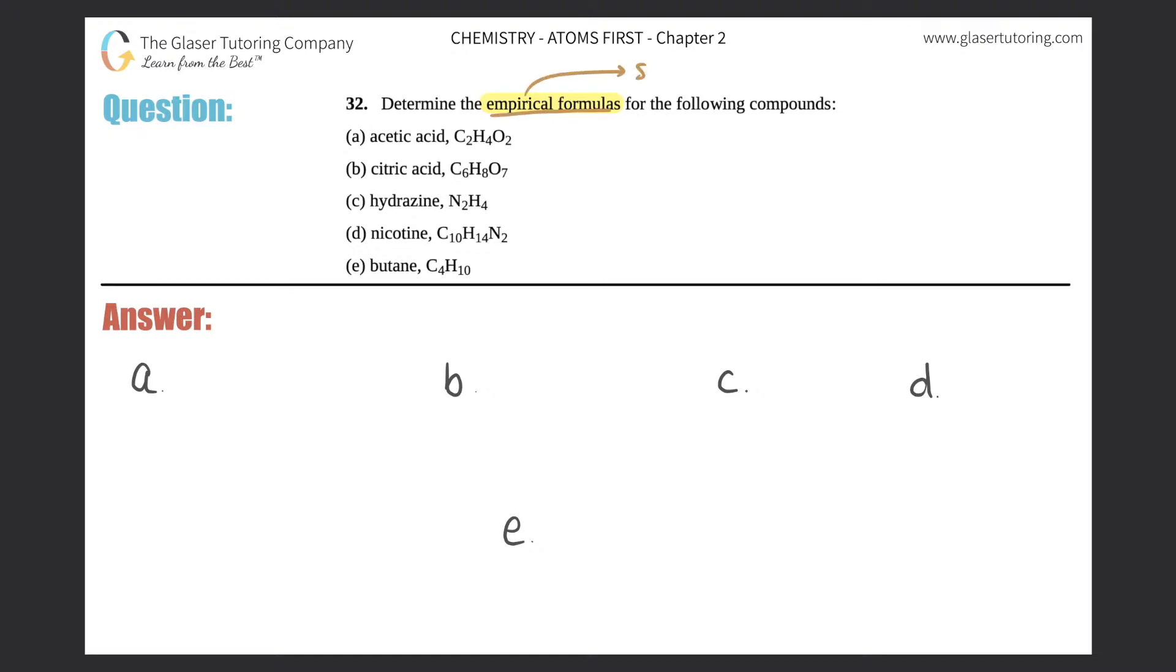They're always the most simplified formula for a compound, and you'll always be able to simplify that formula by division. You take your subscripts and divide by the number that is in common for the numbers in the compound.